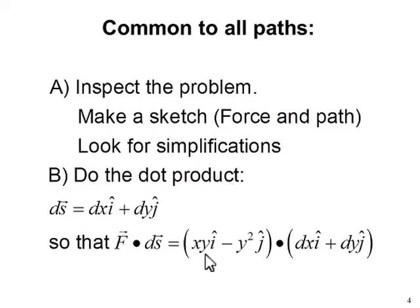In this case, our force was xy*i minus y²*j. And our path in Cartesian coordinates is always dx*i plus dy*j. The relationship between dx and dy will be determined by the path that we choose. Then we complete the dot product.